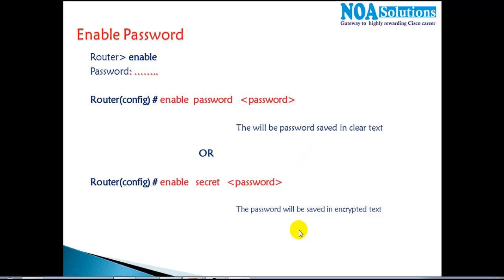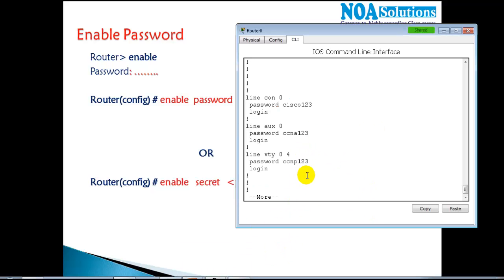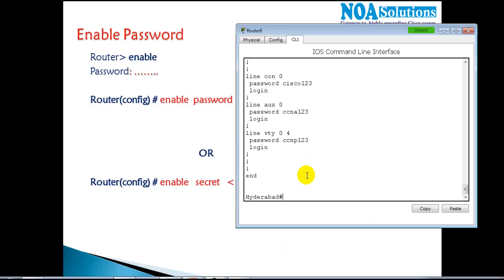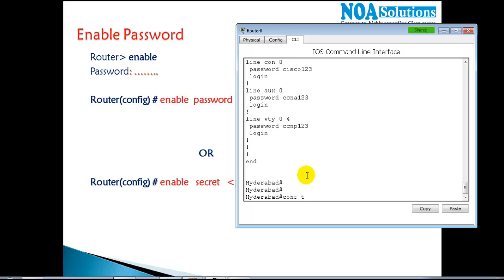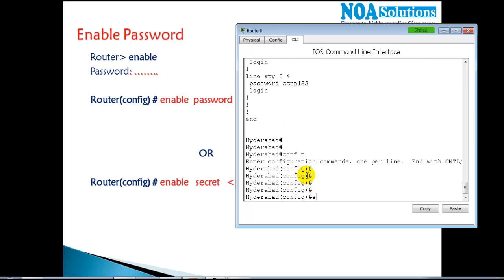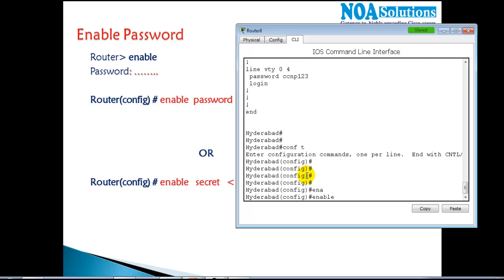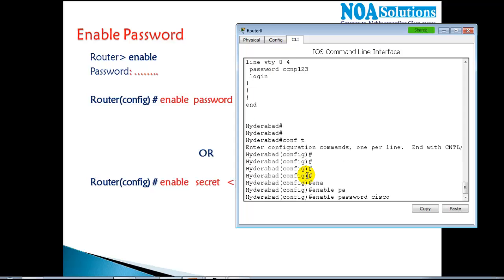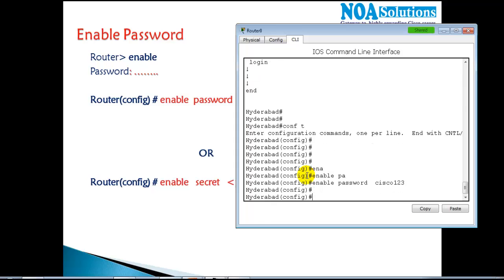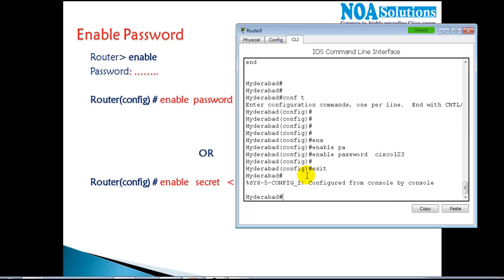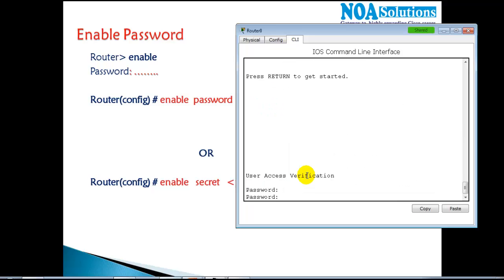Let me get into the command line of the router — I already have some passwords configured. I'll type 'enable password cisco123' to set the enable password. Now let me verify whether it is working by exiting back.